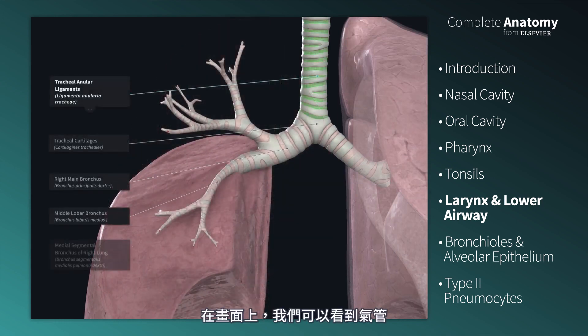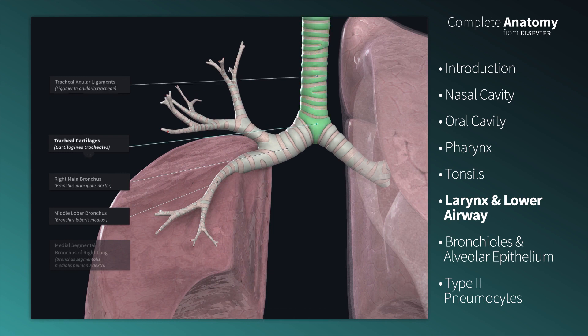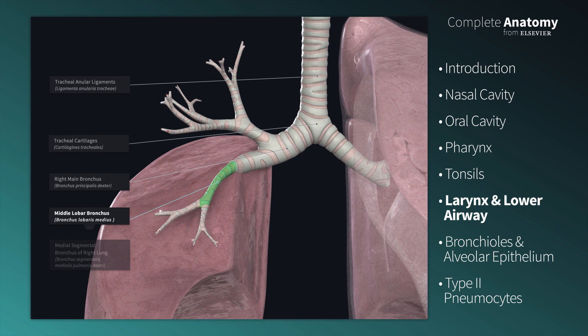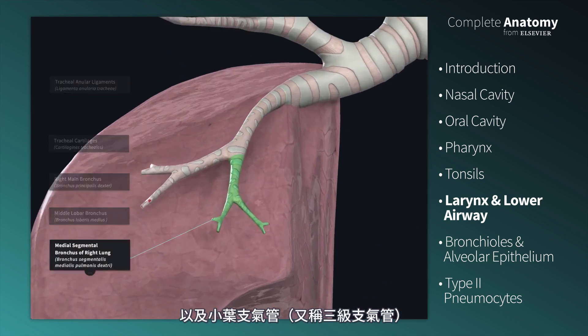Here we see the trachea and its cartilages, the right mainstem bronchus, a middle lobar bronchus or secondary bronchus, and finally, the segmental bronchi or tertiary bronchi.